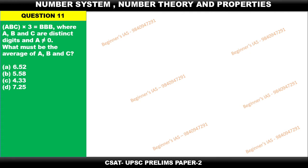Hello everyone, welcome you all. Let us discuss one number system based problem: ABC × 3 = BBB, where A, B, and C are distinct digits and A is not equal to 0. What must be the average of A, B, and C?